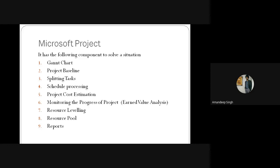The next component is resource leveling, which means fixing the time schedules. We can select manual leveling or automatic leveling in the software. In manual leveling, we enter values such as the project must finish by a certain time, or the class must start at 11:00 AM on a particular date, or the project must finish as late as possible from the finish date. These numbers can be fixed in the Microsoft Project software.